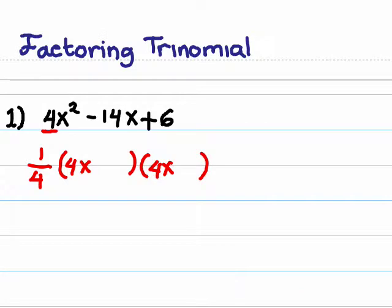The next step, look at the product of the coefficient of x squared and the constant, so 4 times 6 is 24. And then look at the coefficient of x, negative 14.